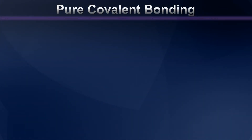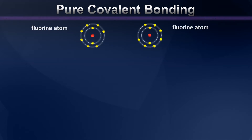Let's begin our discussion by considering two unbonded fluorine atoms. I've shown them here as Bohr models, the simplest atomic models necessary to explain pure covalent bonding.